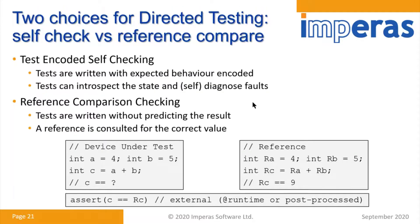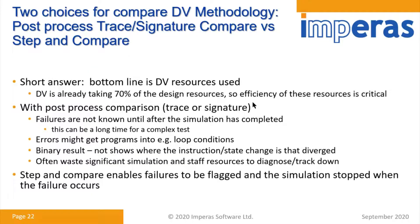It's better to have a reference comparison where you don't predict the result and you consult the reference at runtime to know what has happened — assertions rather than hard-coded values. So the first choice with directed testing is whether you self-check or reference compare. If you do a reference compare, you have to choose whether you do a trace signature compare after simulation or a step-and-compare. All of this is about the resources you have, because DV already takes a significant part of the resources in the SOC. A post-process comparison — trace or signature-based — is often challenging because the failure isn't known until simulation is completed, and things might get into loop conditions.